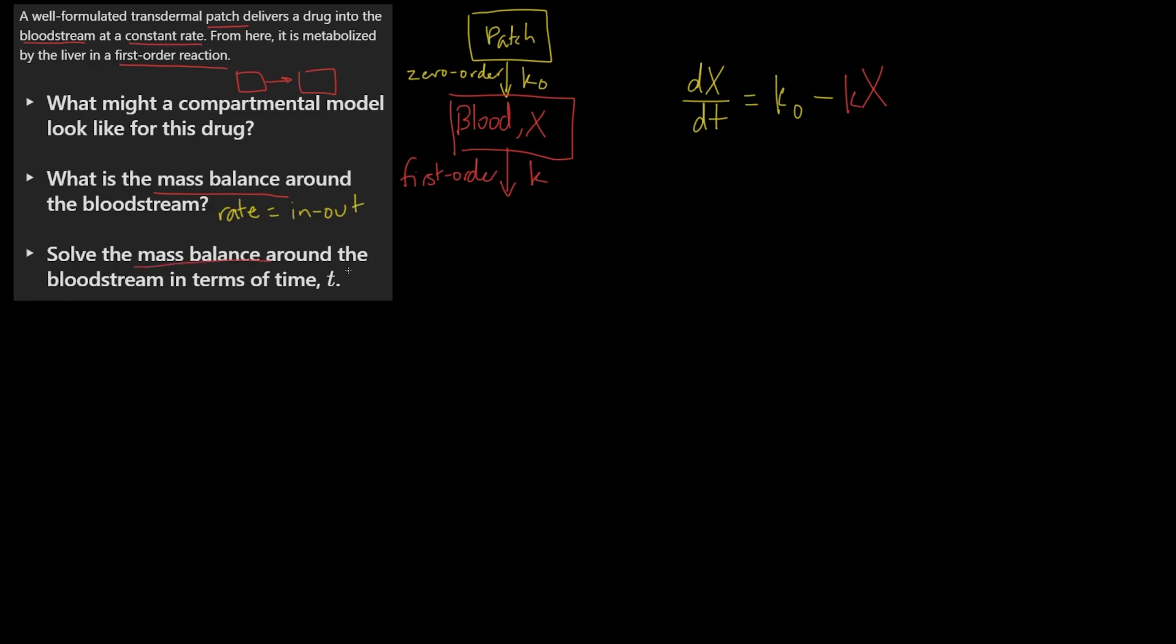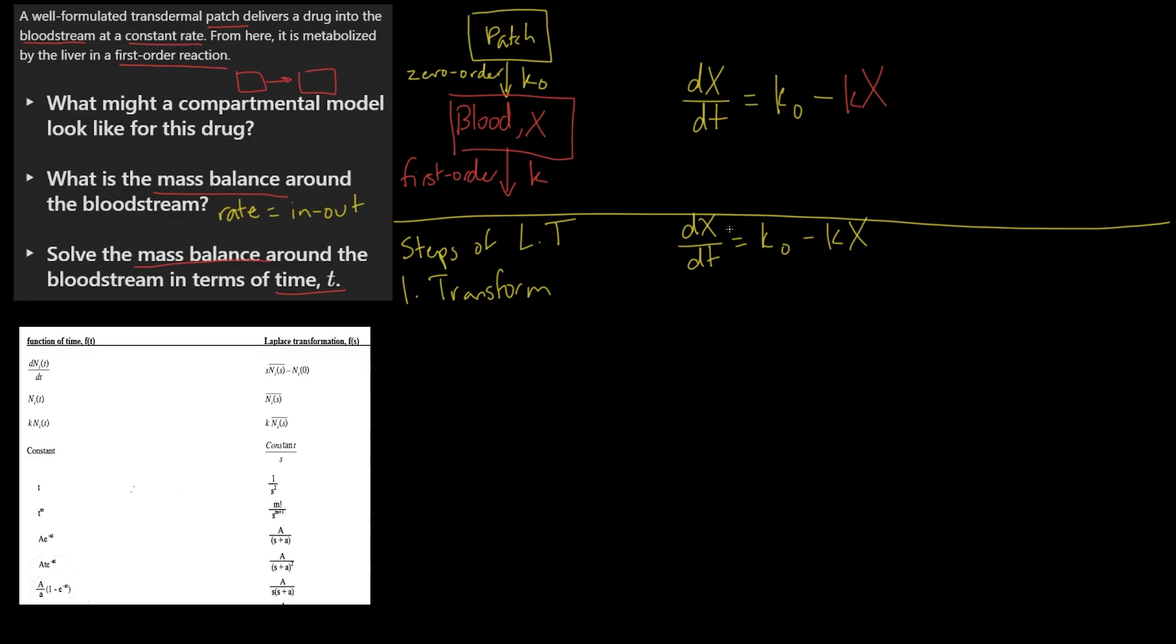Now we want to solve the mass balance around the bloodstream in terms of time t. But to do that, you want to do a Laplace transform. So the steps of the Laplace transform would be: step one, transform. So we start with dX/dt equals k₀ minus kX.